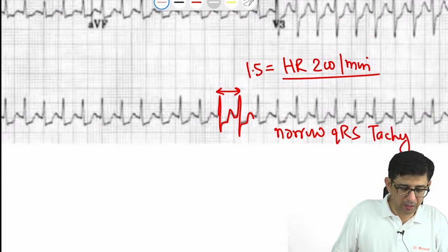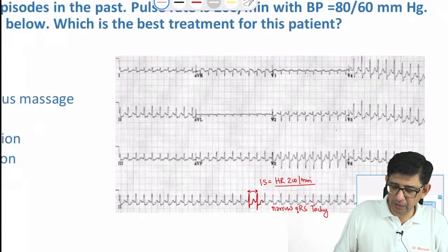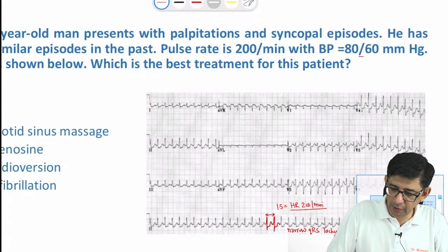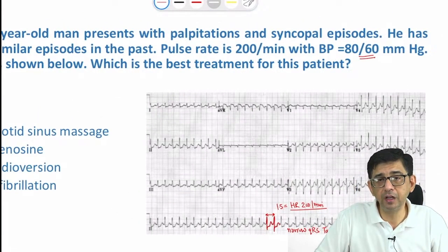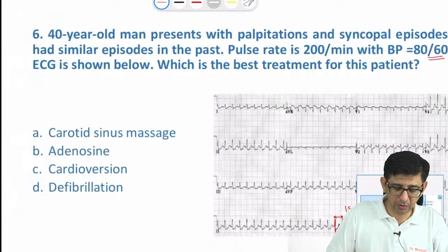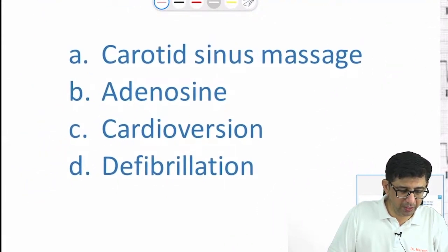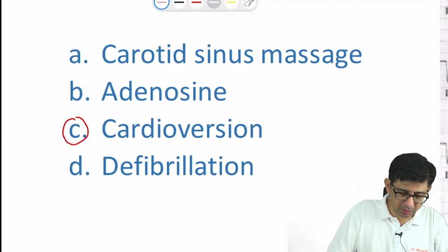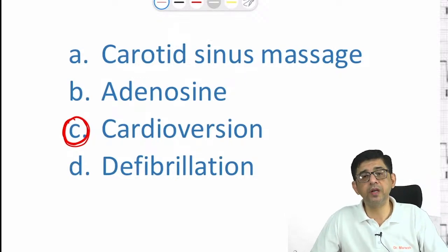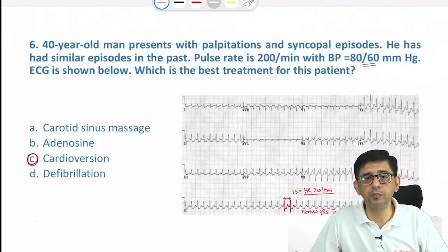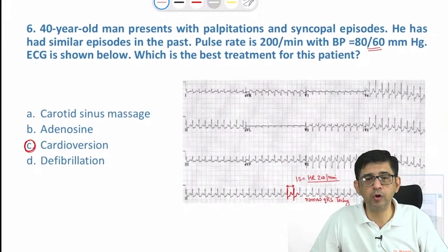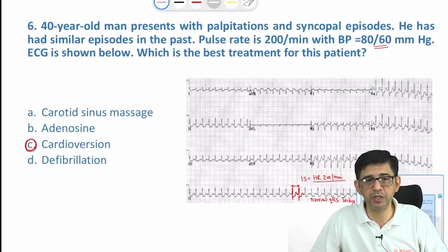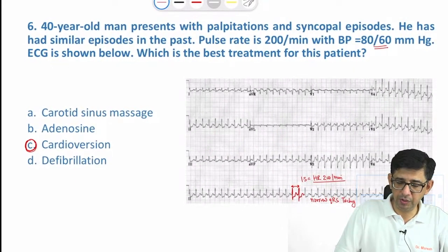Since the blood pressure is only 80 by 60, there's no role for drugs. We'll straight away go ahead with cardioversion in this patient. This is a spot-on question. Every time there's a BP that is low with PSVT, the answer would always be cardioversion.